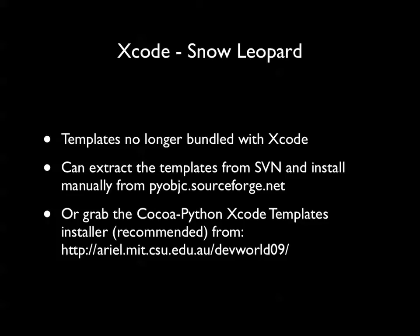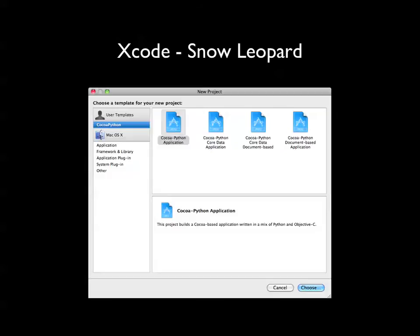The proper way to install templates on Snow Leopard is to go to the official PyObjC website, grab them from SVN, and install them manually — but that's a lot of work. I've also packaged them up in an installer file which you can download, and just double-click to run through the installer and install the templates into Xcode under 10.6. Rather than being under the Applications section, they install into the User Templates area, so you'd select Cocoa Python in the User Templates section and then select what type of application you want.